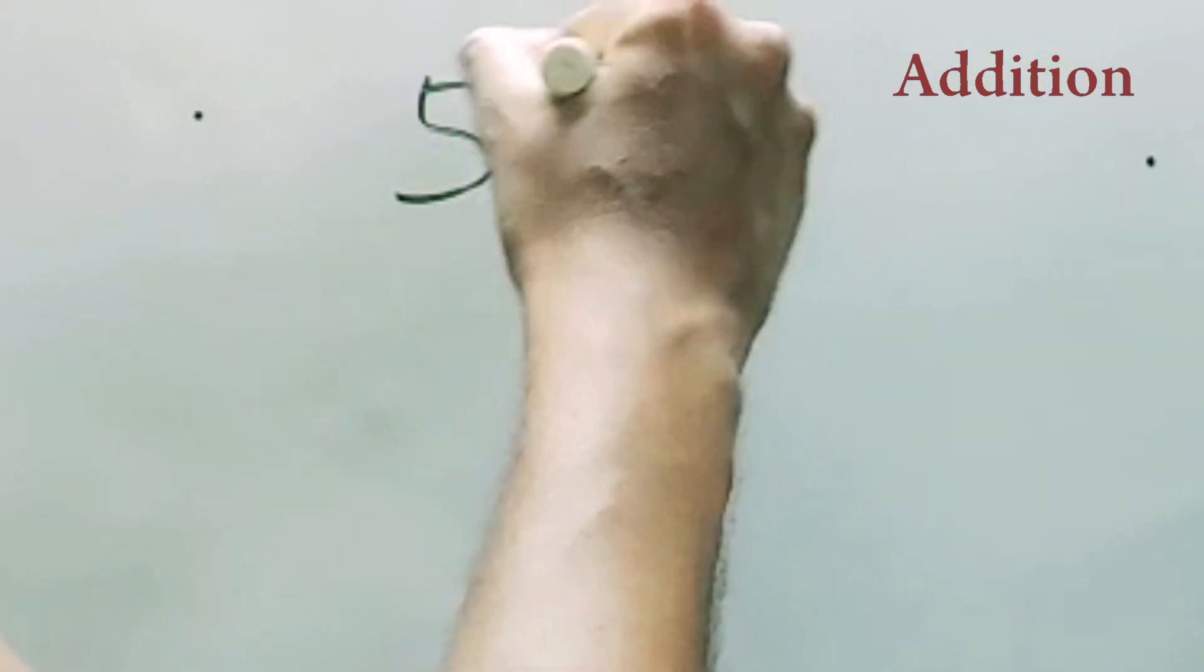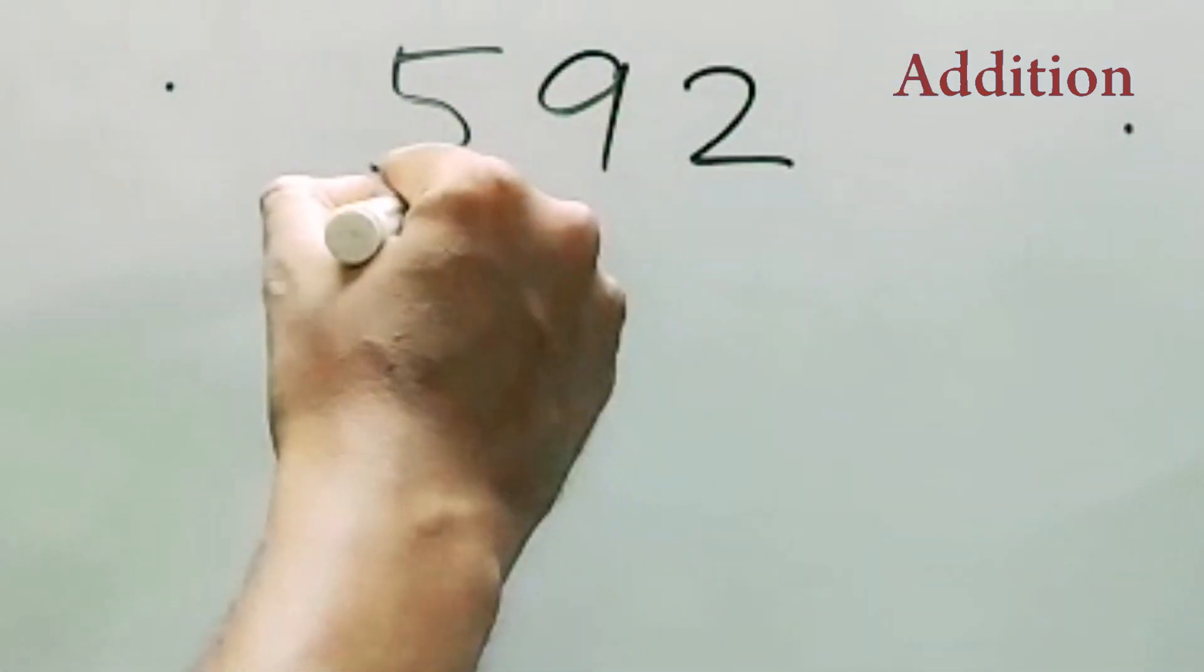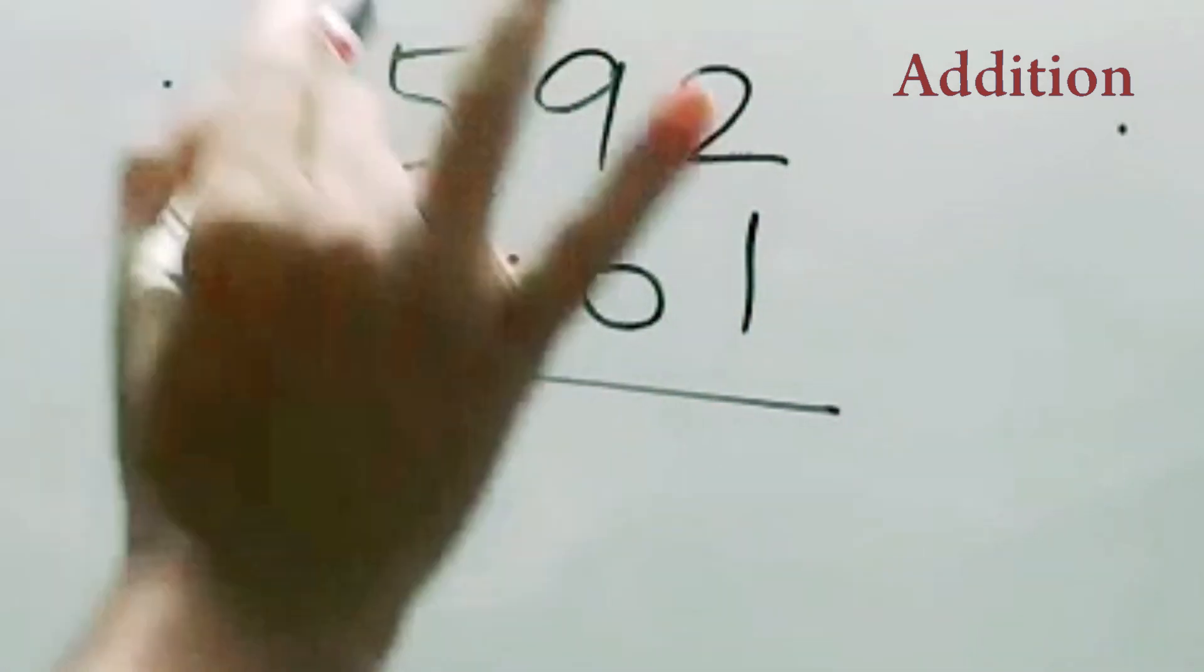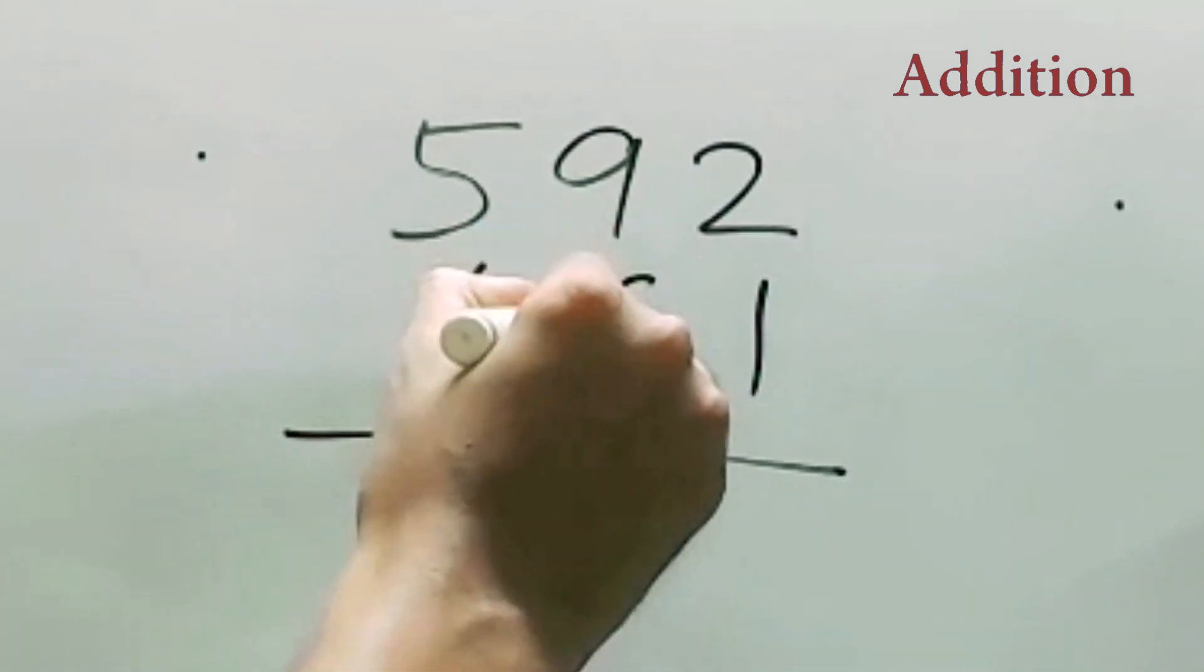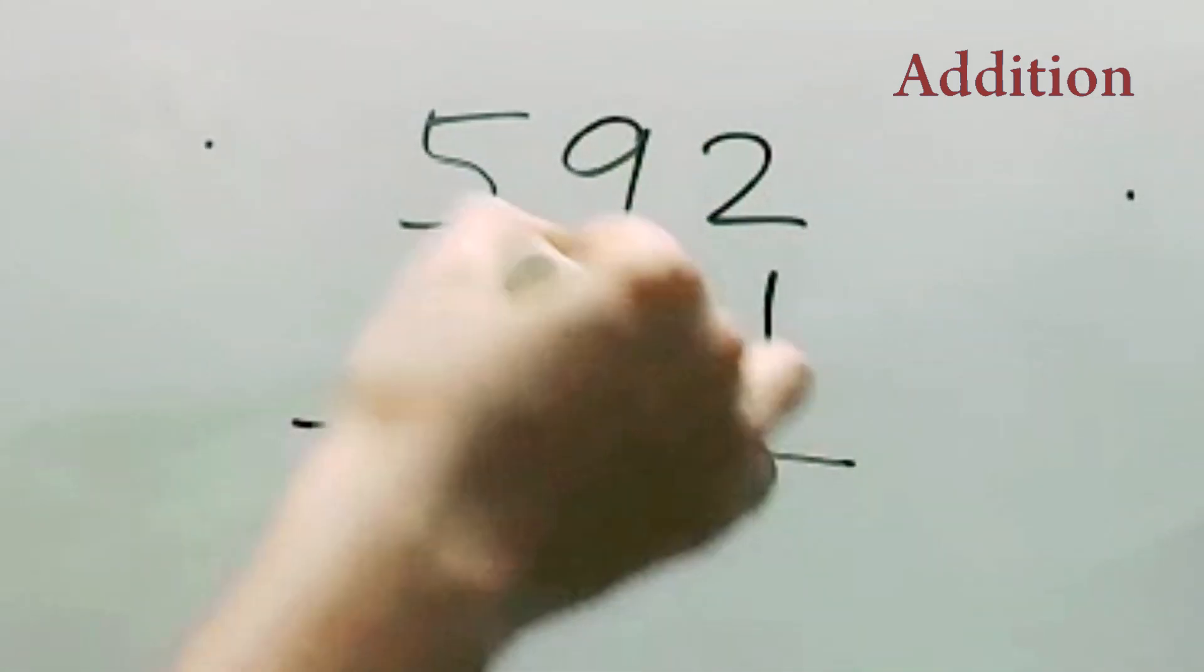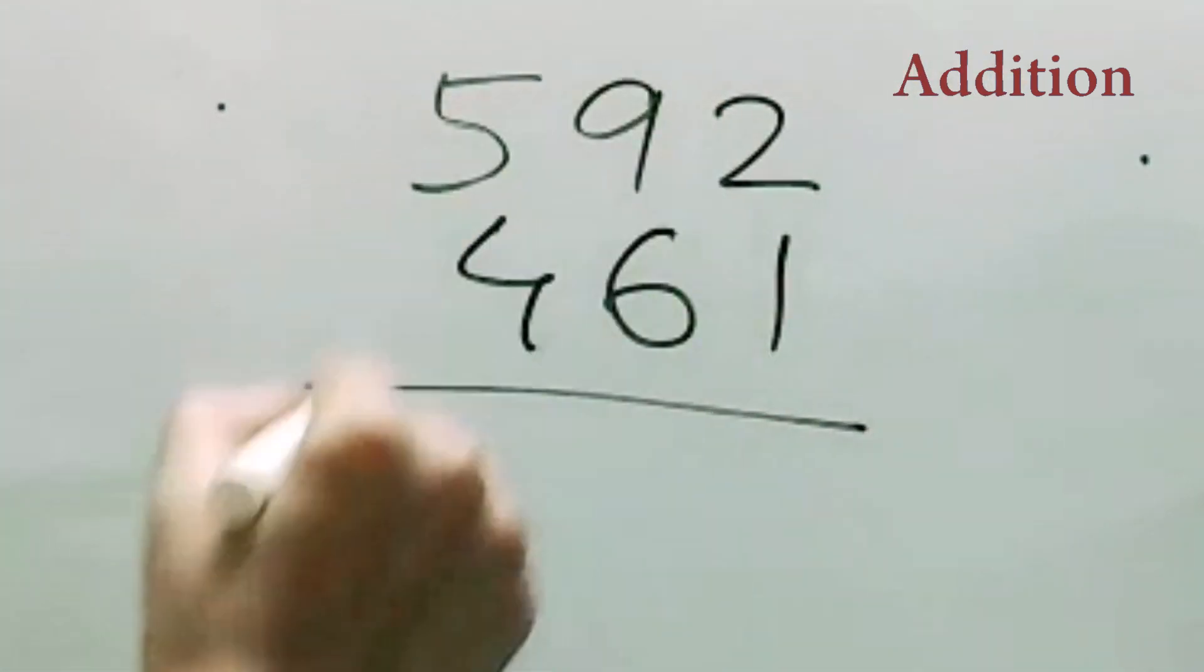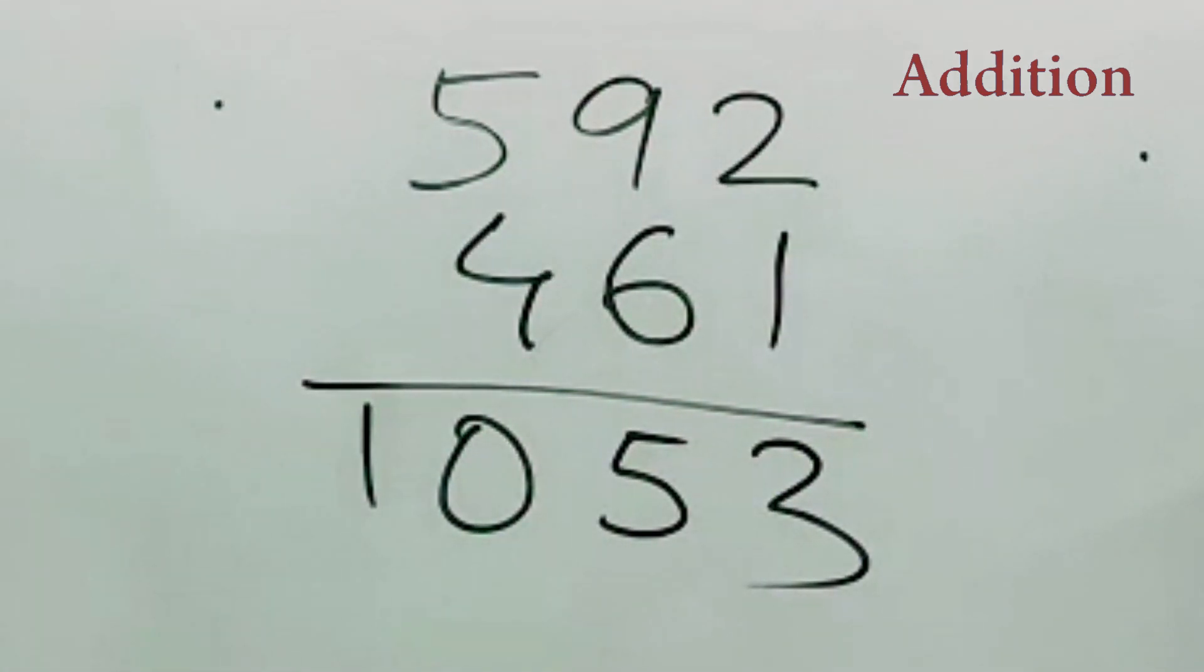Let's do another one, like 592, and then anything like 461. So just remember that 500 and 400, that is 900, 90 plus 60, that is 150, so 1050, and 2 plus 1, 3. So 1053. That's it. So simple.